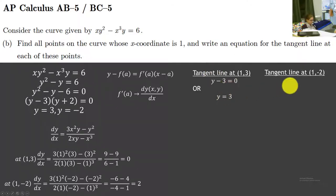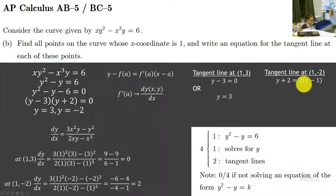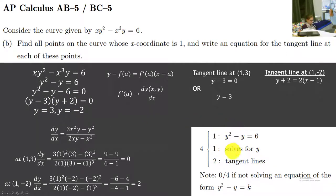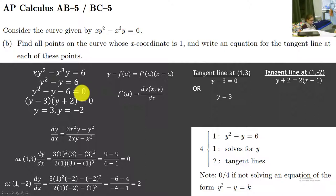We get 4 points for that: 1 for writing the equation y² minus y equals 6, 1 for solving for y by factoring, and 2 other points — 1 for each tangent line. But if we don't get the substitution step, we get 0 points for the rest. So part A was 2 points, part B was 4 points, which means we should have 3 points left for part C.